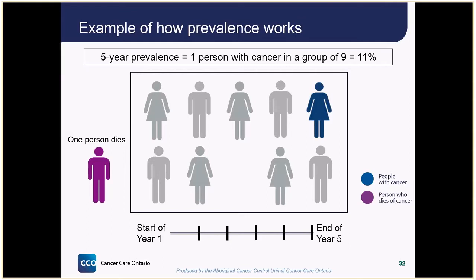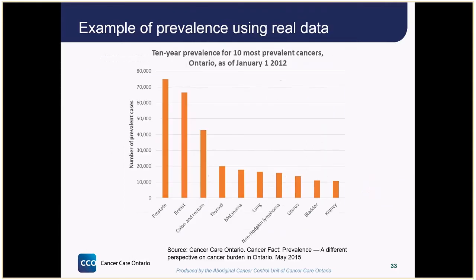So our five-year cancer prevalence is one person with cancer in a population of nine, or about 11%. Here's an example of prevalence using real data.